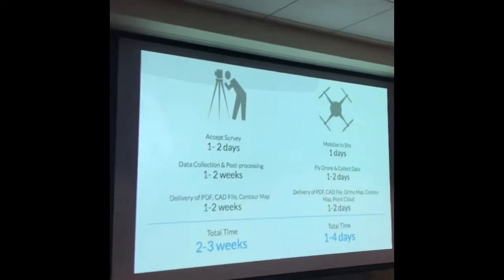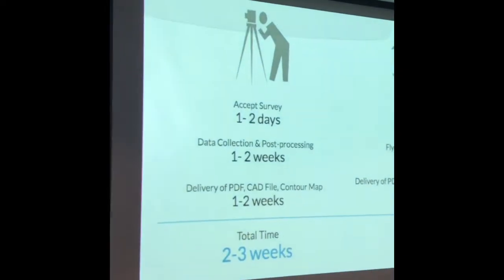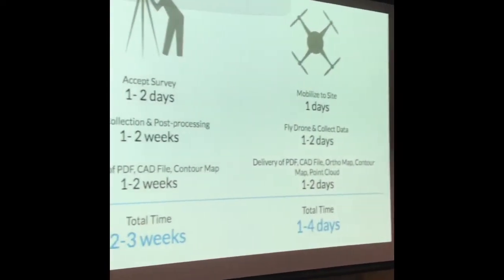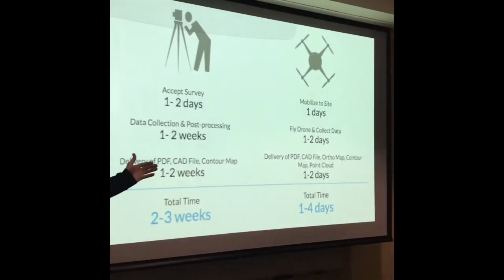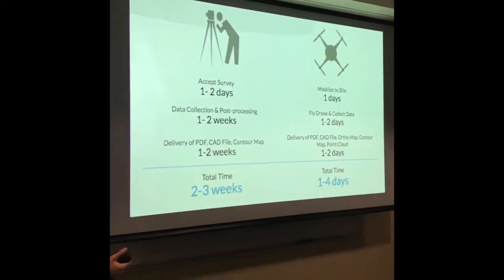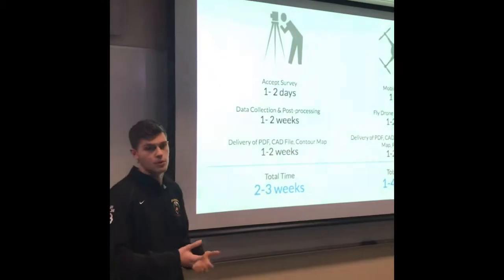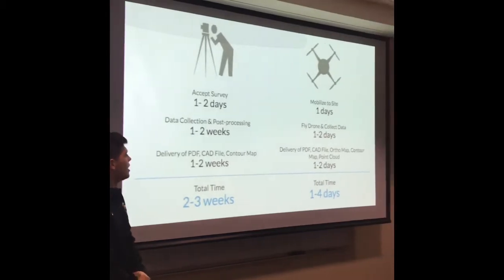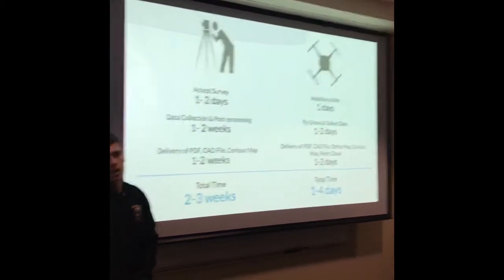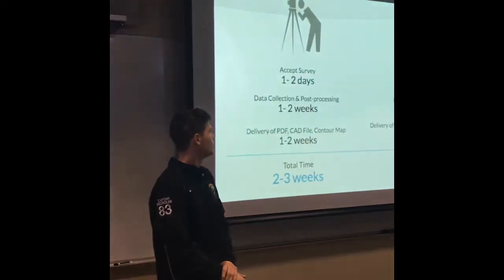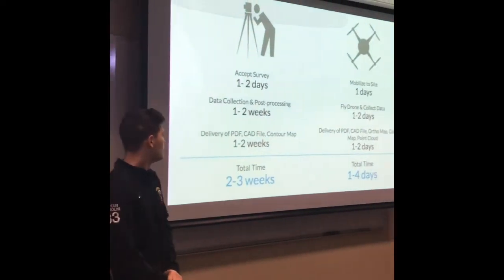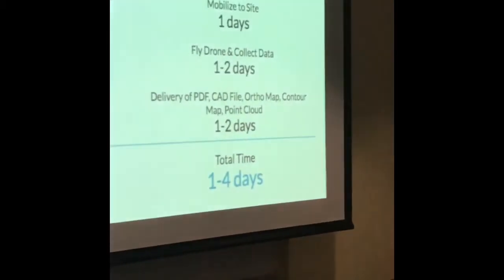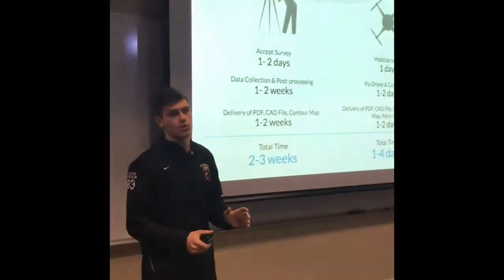As you can see in this picture, a normal survey takes one to two days to collect all the points, and data processing can take one to two weeks, whereas a drone does this in a day or two. Getting a PDF of the contour or topographic map takes one to two weeks with a traditional crew, but only one to two days with a drone. In total, a two-person crew takes two to three weeks, while one person with a drone takes just one to four days — and it's also much more accurate.